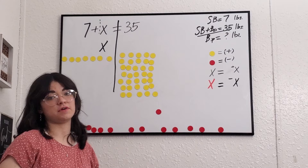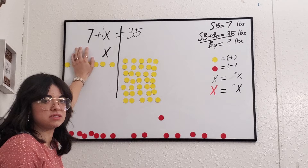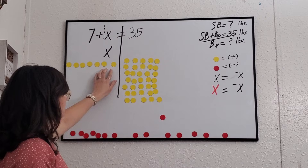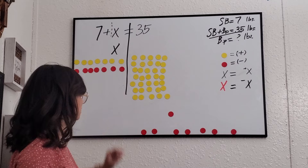Remember, when solving an equation for a variable, we need the variable to be by itself. To get rid of the seven, we subtract seven — so we add seven negative units to the left side to cancel the seven positive units. Then, what we do on one side we must also do on the other, so we place seven negative units on the right side as well.